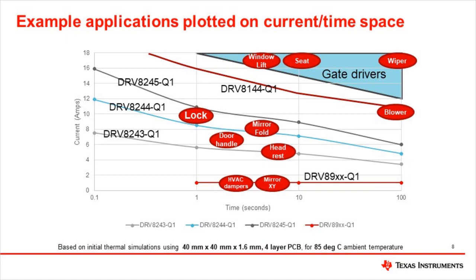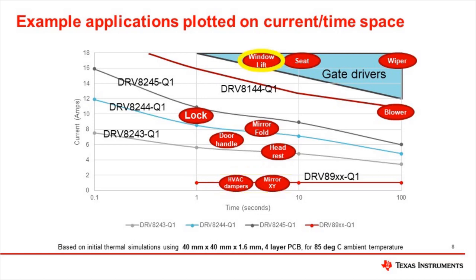Here various applications are plotted with the current versus time curves for some of the motor drivers. Lock motors typically operate for a second or less and might have maximum currents up to 10 amps; the DRV8245Q1 might be a good fit. A power headrest could be adjusted for a few seconds with a current of about 5 amps; a DRV8243Q1 would be a candidate. The mirror-fold motor could use a DRV8244Q1 or DRV8245Q1 to drive up to 10 amps for a few seconds. Pop-out door handles with a maximum current of about 8 amps could select the DRV8244Q1. Low current motors for ventilation dampers and side mirror adjustments could use a DRV89XXQ1 with up to 12 half bridges in one package. Window lift motors can have currents well above 10 amps, so a gate driver with external FETs is a good choice.